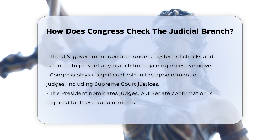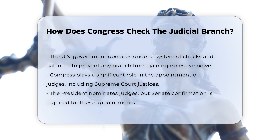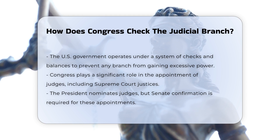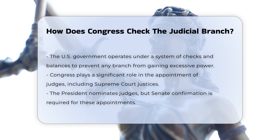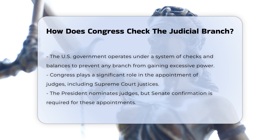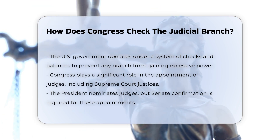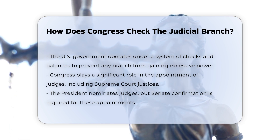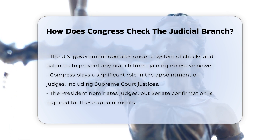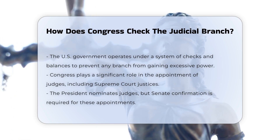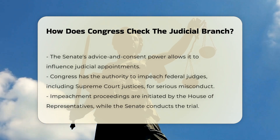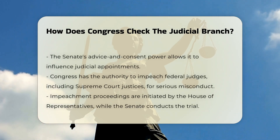Congress plays a crucial role in the appointment of judges. The president nominates Supreme Court justices, Court of Appeals judges, and District Court judges, but these nominations must be confirmed by the Senate. This advice and consent power allows the Senate to influence who holds office in the judicial branch.